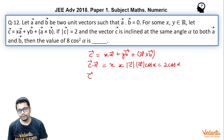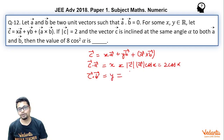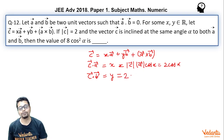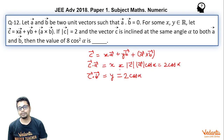Similarly, when you take dot product with B vector on both sides, you get C vector dot B vector equals Y, which in the same way equals magnitude of C vector times magnitude of B vector times cos alpha. Magnitude of C vector is 2, magnitude of B vector is 1, so Y = 2 cos alpha. So both X and Y are 2 cos alpha, and we have been given the additional information that magnitude of C vector is 2.